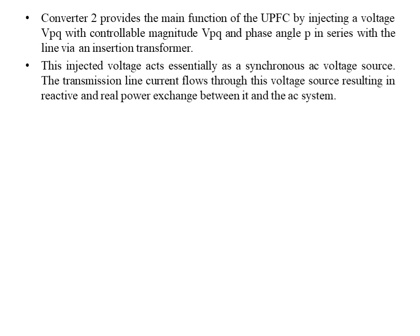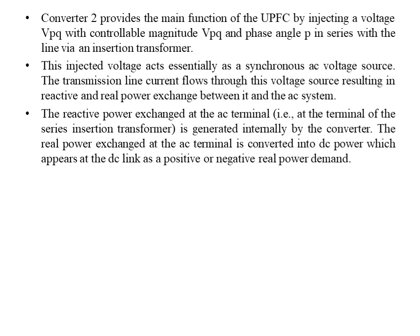By injecting the voltage, Converter 2 generates reactive and real power, since current flows through the transmission line and we inject voltage — power being the product of voltage and current. Depending upon the magnitude of voltage injected into the transmission line, the magnitude of reactive and real power is determined. The reactive power exchanged at the AC terminal of the series insertion transformer is generated internally by the converter. The real power exchanged at the AC terminal is converted into DC power, which appears at the DC link as positive or negative real power.